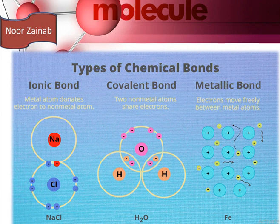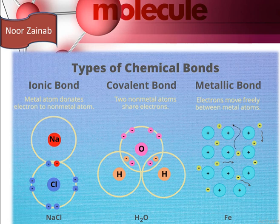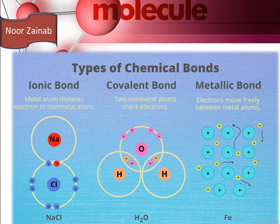The first type of chemical bond is the ionic bond, which involves the donation of electrons from a metal atom to a non-metal atom. For example in NaCl, an electron is transferred from sodium atom to a chlorine atom, and an ionic bond is formed due to electrostatic attraction between sodium ion and chlorine ion. Sodium will lose the electron and become positively charged, and chlorine will gain the electron and become negatively charged.